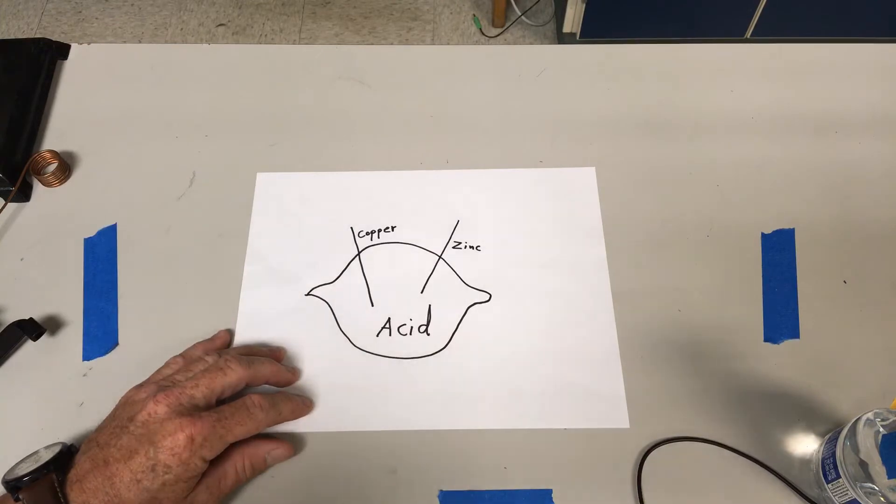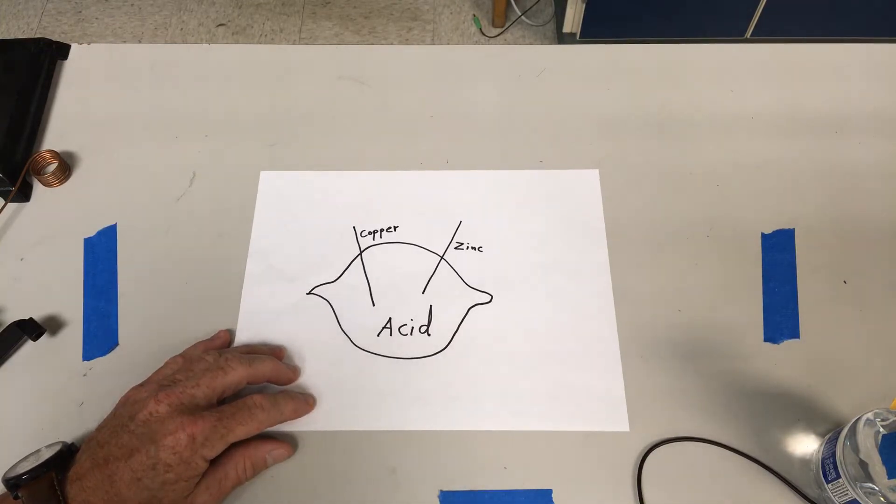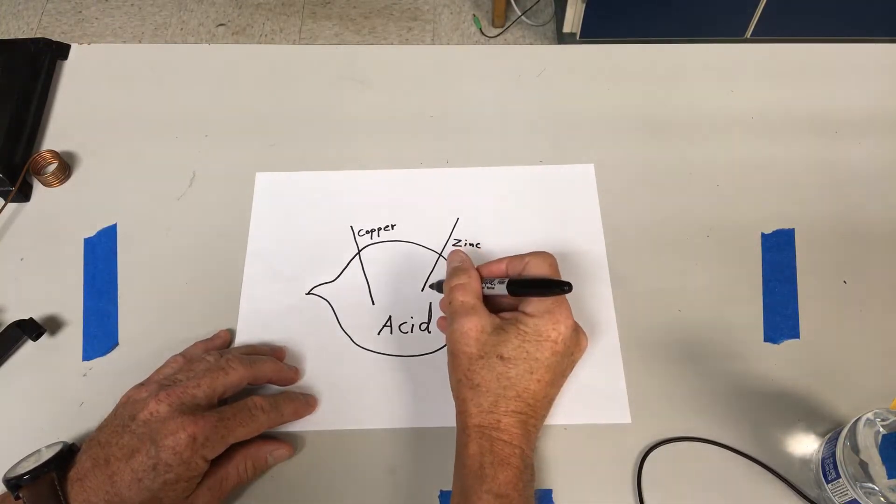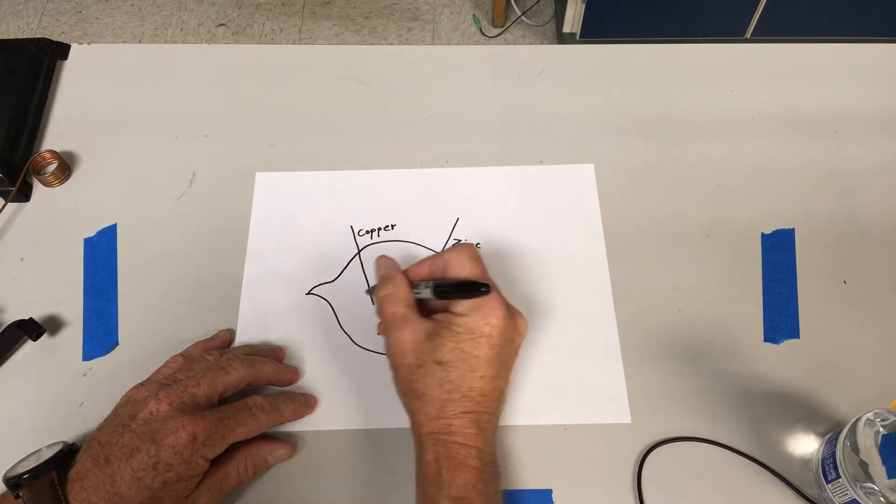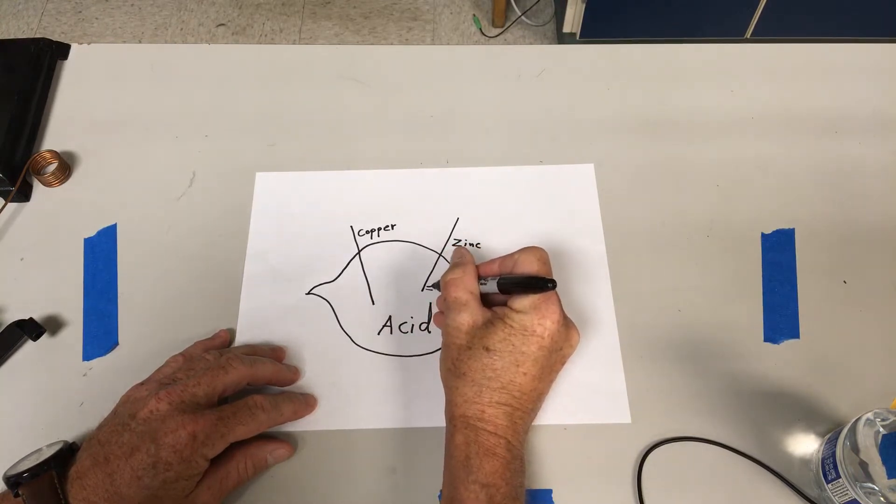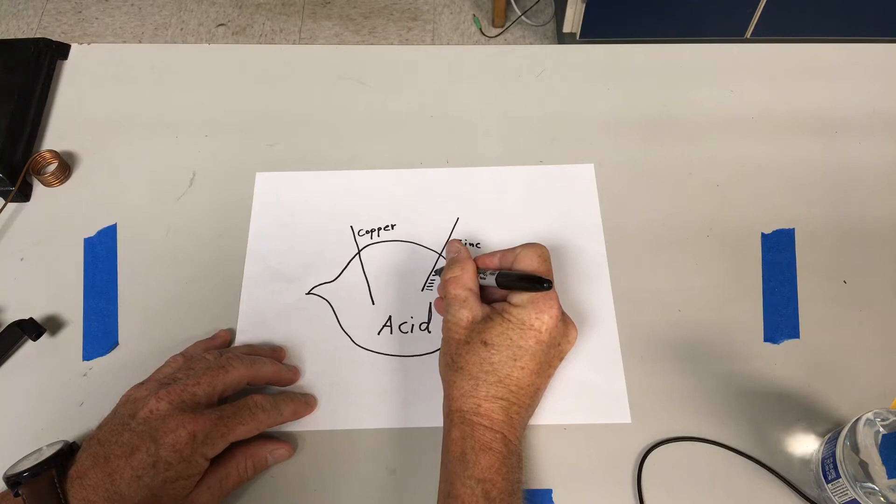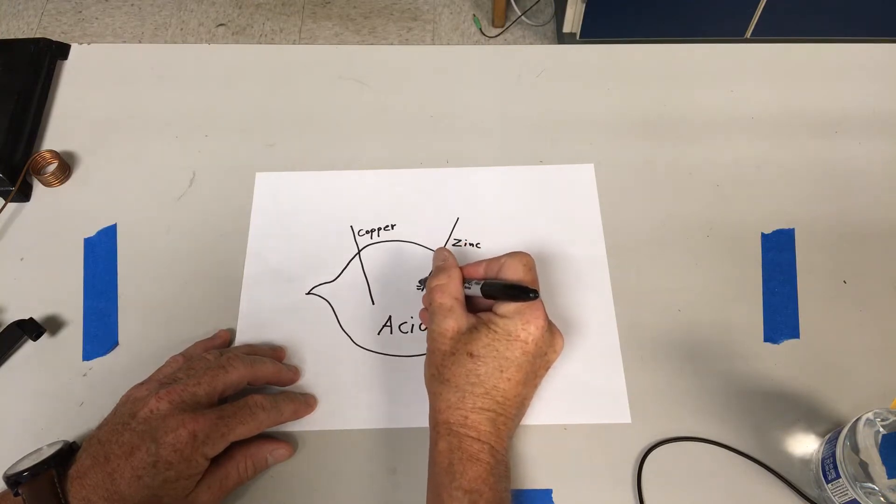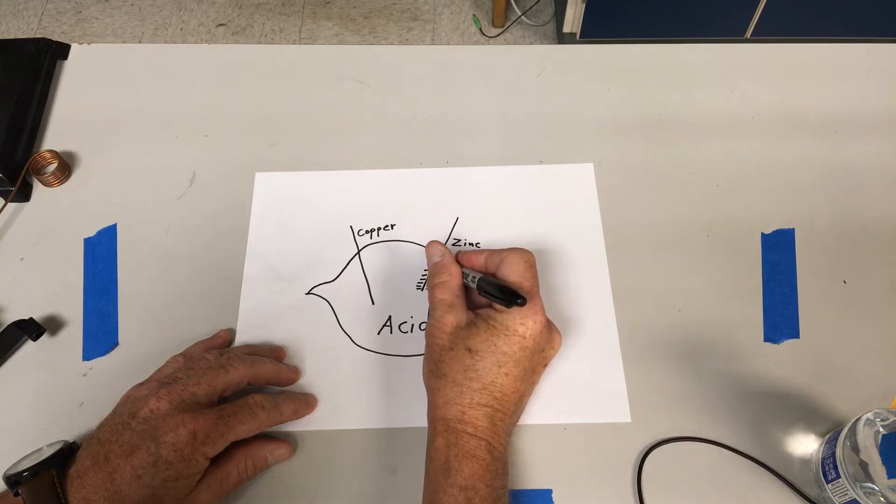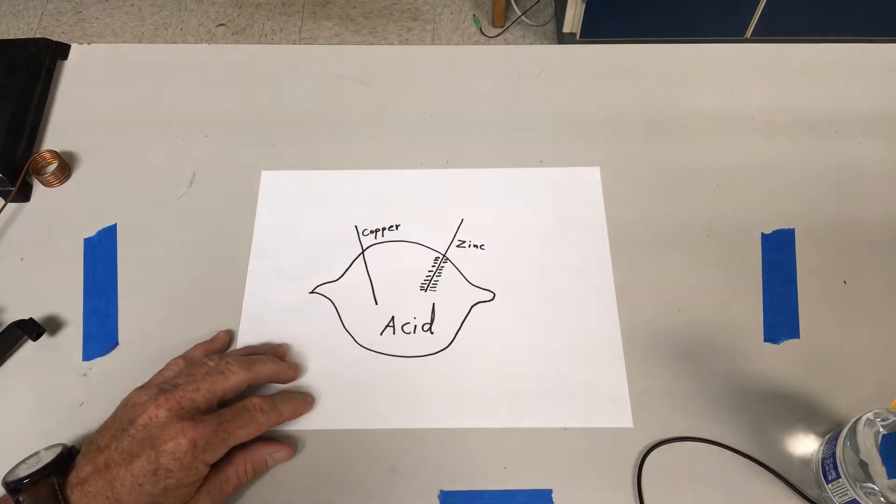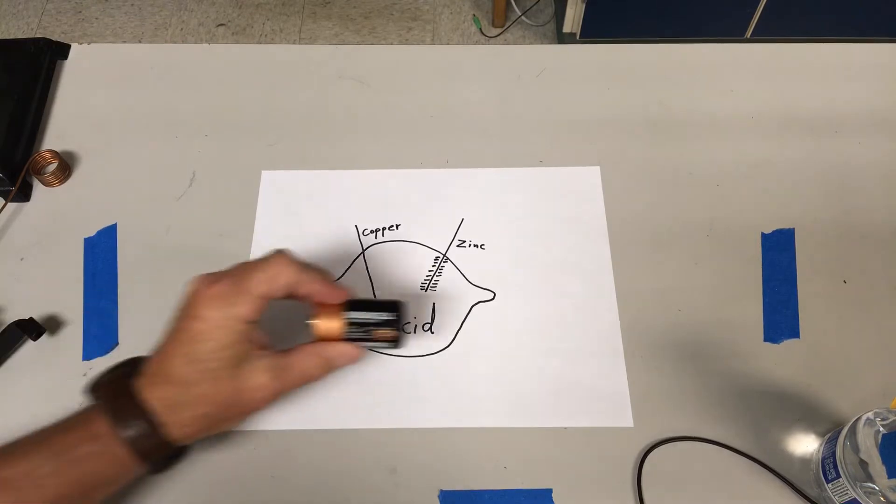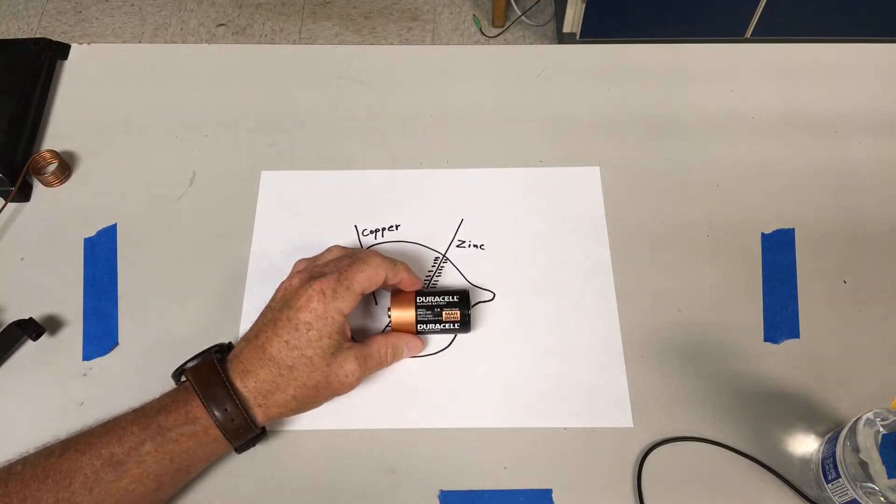This is a very simplistic version, but it basically makes the electrons in here all collect on one of these posts, and they get crowded in there and they don't like to be there. This would be right now like a brand new battery.